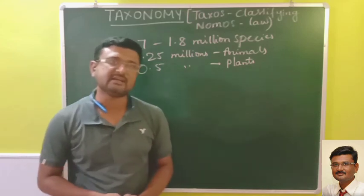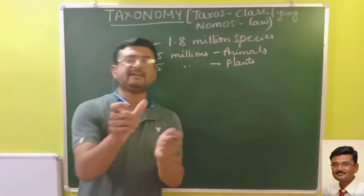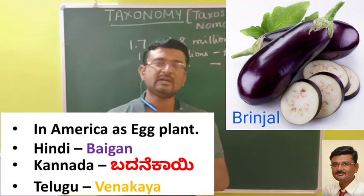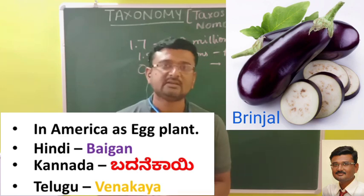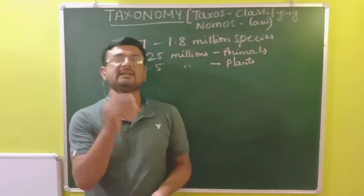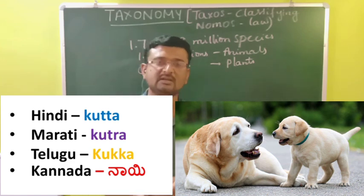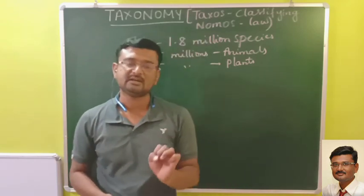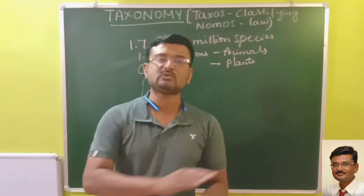With such a huge number of species, names vary from language to language and country to country. For example, brinjal is called eggplant in English, baingan in Hindi, barnekai in Kannada, and venkaya in Telugu. Similarly, dog is called kutta in Hindi, kutra in Marathi, and kukka in Telugu. This creates a lot of confusion in identifying the animal.